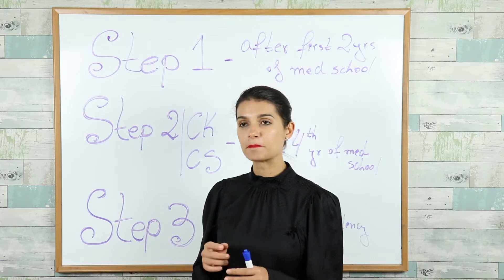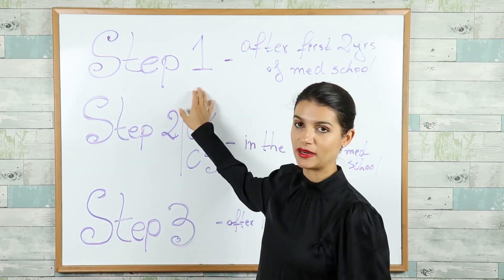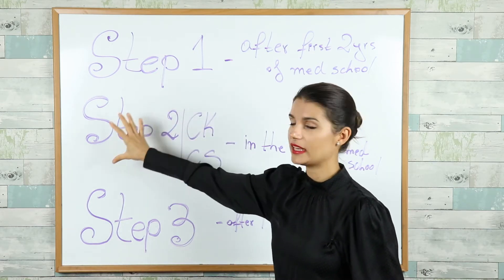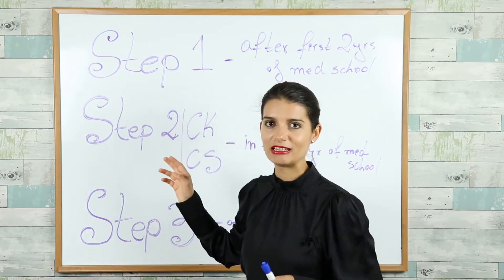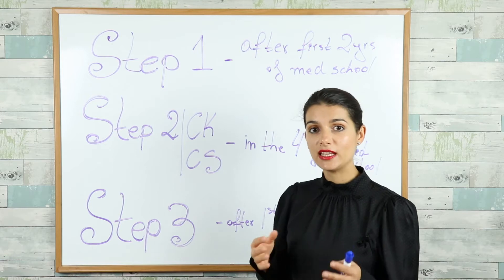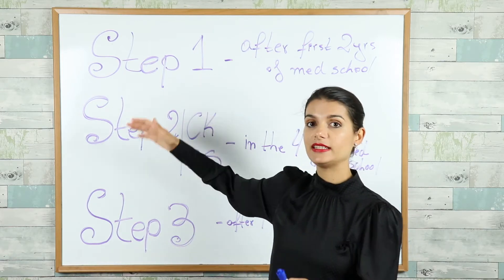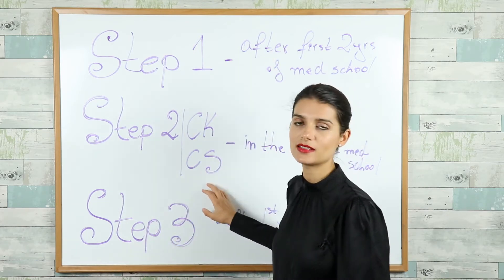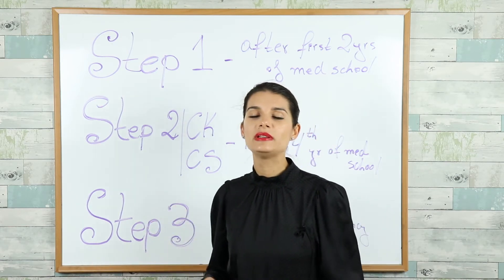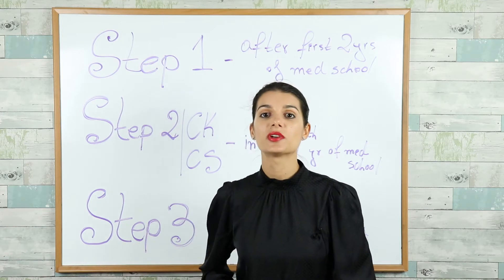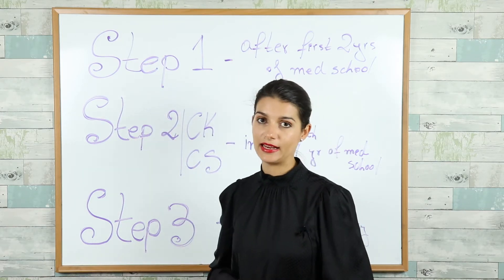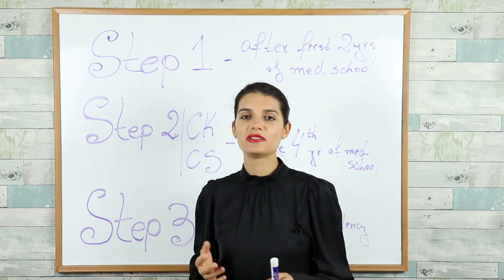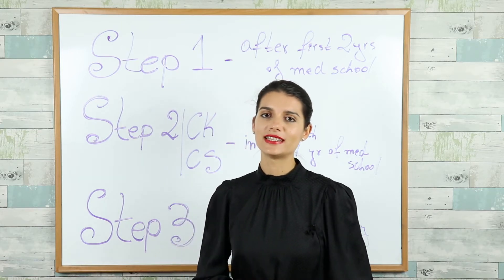The competition for residency spots in the United States is really, really big, so it's a good idea to pass and score high on step three before you apply. The key rule is: from the date you pass step one, you have seven years to take all three — or in reality five — exams. If you fail to complete all of them within that window, all your results will be deleted and you'll have to retake everything. But if you take them all, you seal your USMLE examination and never have to retake any of these tests again.